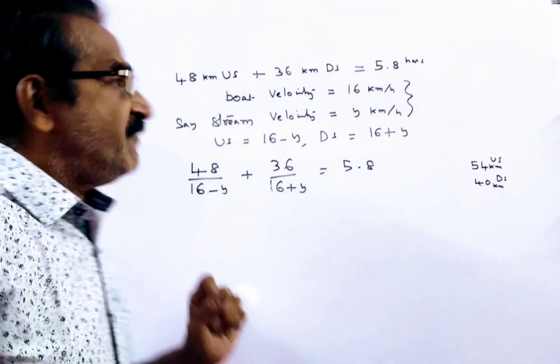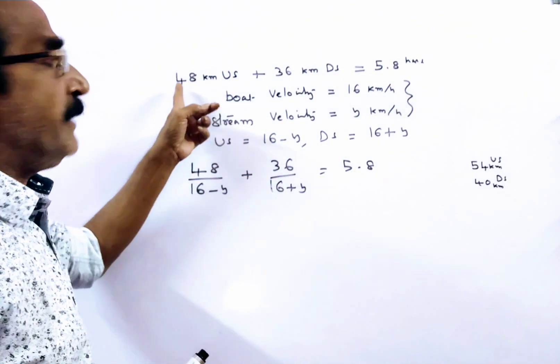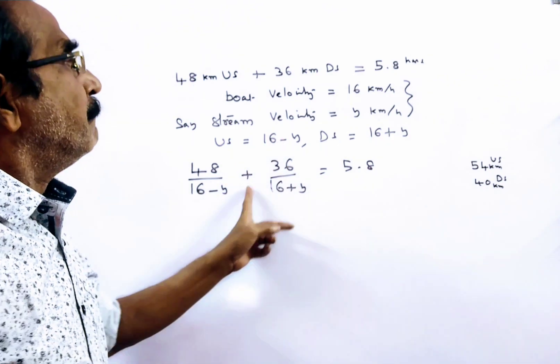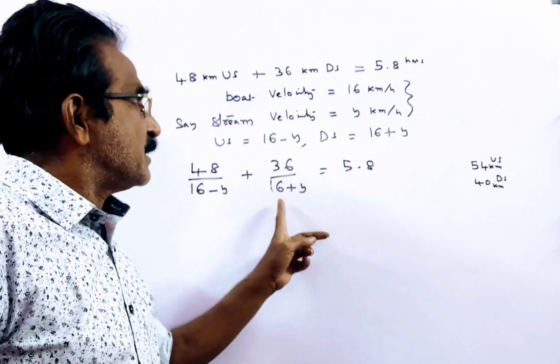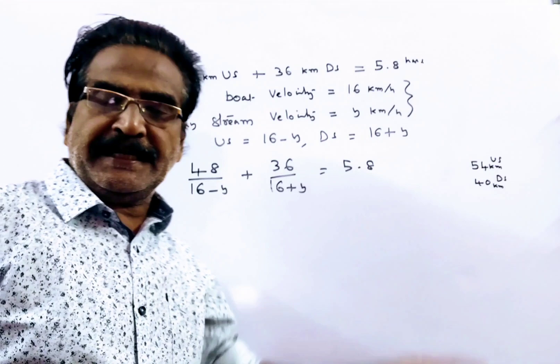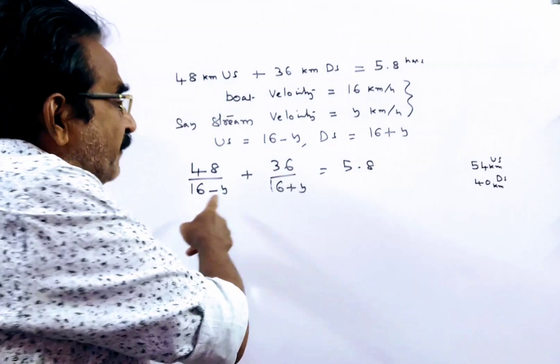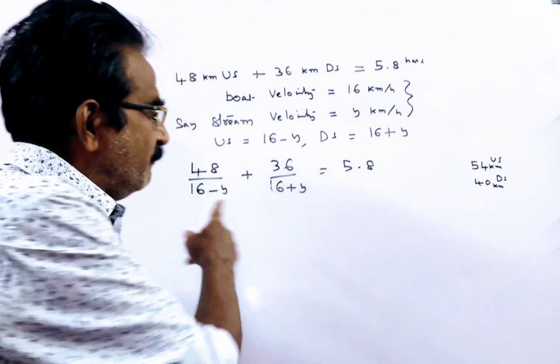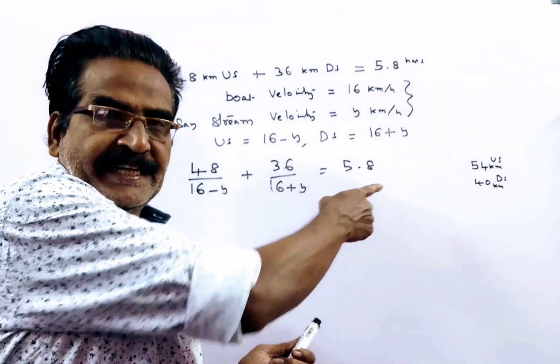Now it is given that the time taken to travel 48 km upstream plus 36 km downstream equals 5.8 hours. So 48 divided by 16 minus y, plus 36 divided by 16 plus y, equals 5.8. y equals 4 will satisfy this equation.